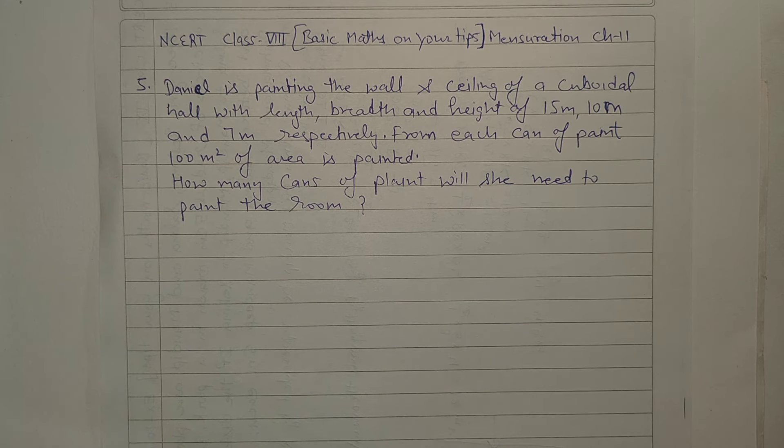Daniel is painting the wall and ceiling of cuboidal hall with length, breadth and height of 15 meter, 10 meter and 7 meter respectively. From each can of paint, 100 meter of area is painted. How many cans of paint will she need to paint the room?